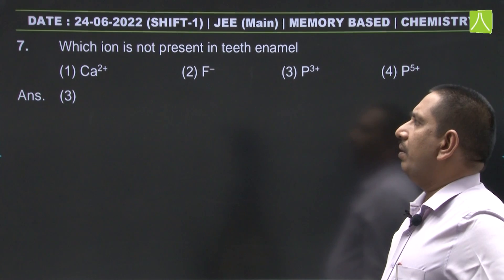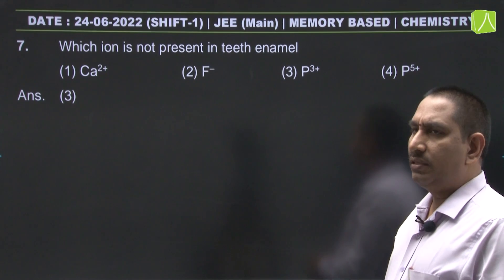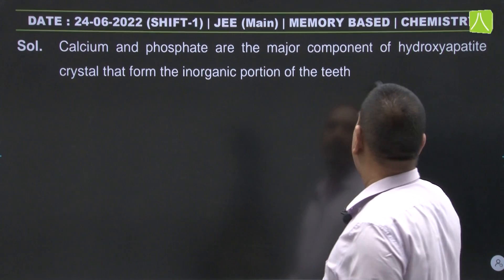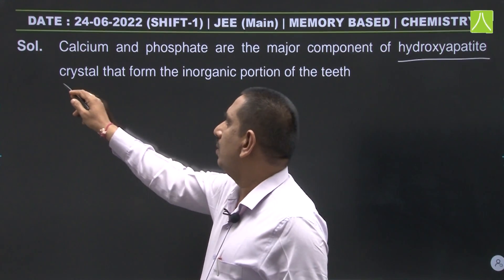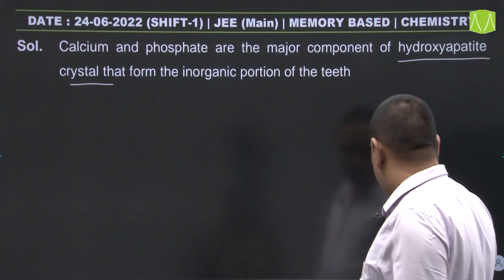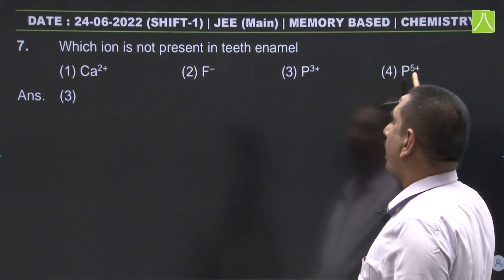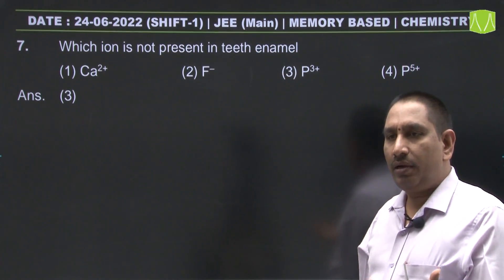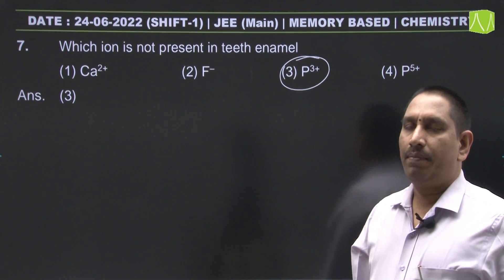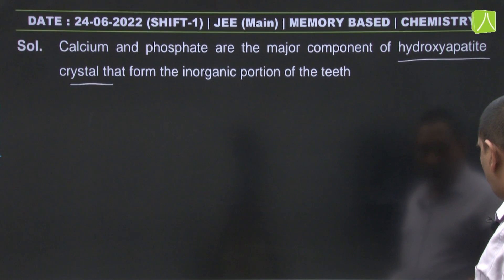Another question: which ion is not present in teeth enamel, belonging to S-block elements? In teeth, the main component is hydroxyapatite crystal. Calcium ions, fluoride ions, and phosphate (phosphorus in +5 state) are present, but phosphorus in +3 state is not. So the answer is P³⁺ ion is not present in teeth enamel.